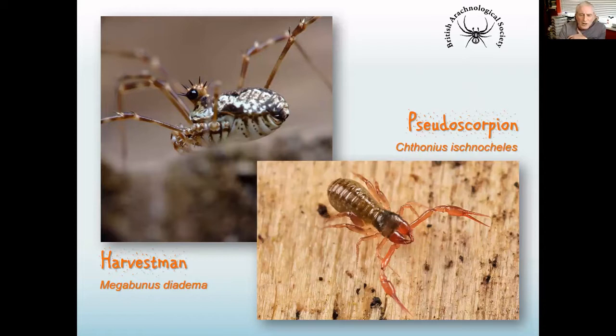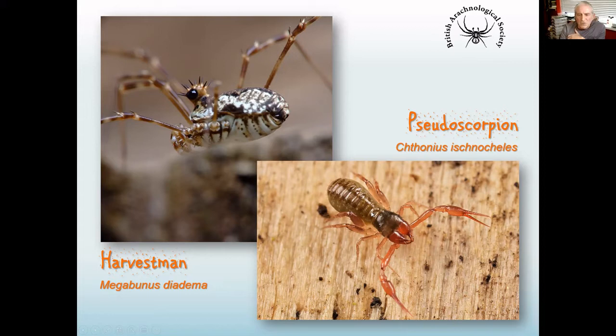Here are a couple of arachnids which aren't spiders. We've got a harvestman — Leiobunum rotundum in this case — a beautiful little thing. Very different from a spider because it's only got two eyes, most spiders have six or eight, and they're raised on a little turret on top of the body. And this is a pseudoscorpion — like a scorpion but without the stinging tail. These are tiny, a few millimetres long, but more abundant than people realise. If you go sieving leaf litter in damp woodland, you're bound to find them.